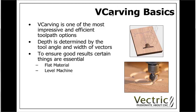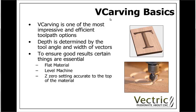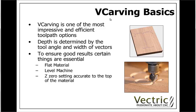Also in the same vein is the fact that you should have your Z0 setting accurate to the top of the material. This is all to do with getting that tip of the tool to leave the material to give yourself nice sharp points at that surface. Generally speaking it's going to be easier to do that by setting the Z0 on the top of the block rather than off the table, because that way you don't need to be as worried about having the exact thickness of your material specified, as everything will be relative from the surface down.